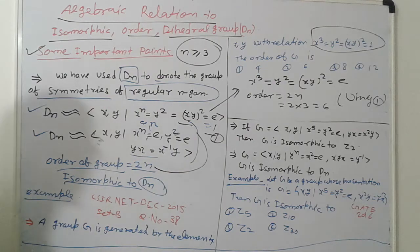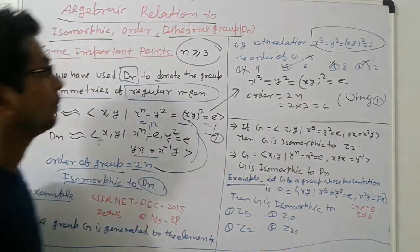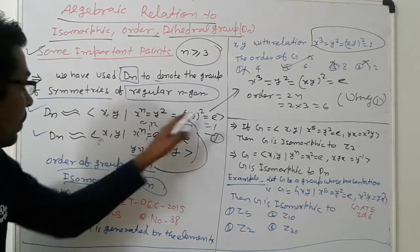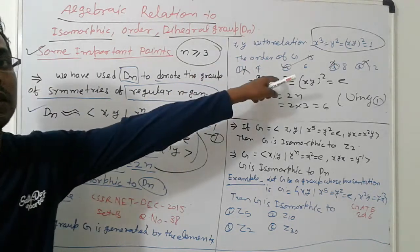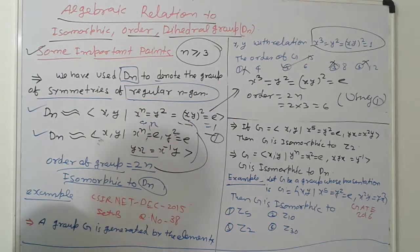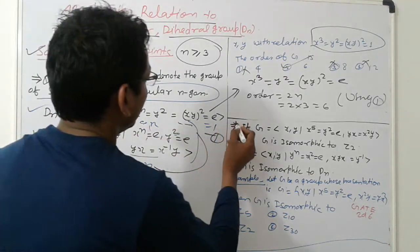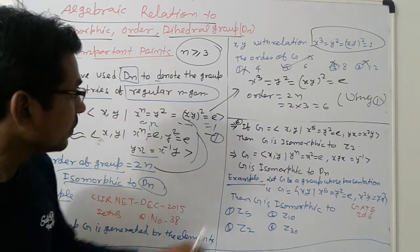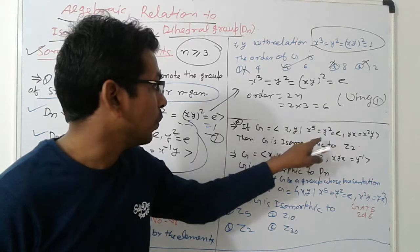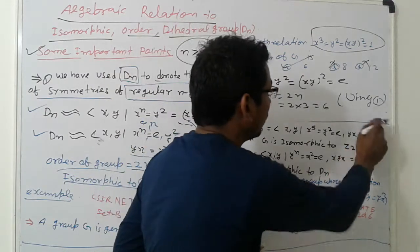So order is 6 — the second option is correct. It is very simple: if we remember that property, then we can solve it. That is the most important thing — remember the properties. Next, the second property: if G = ⟨x, y | x^5 = y^2 = e and yx = x^2 y⟩...